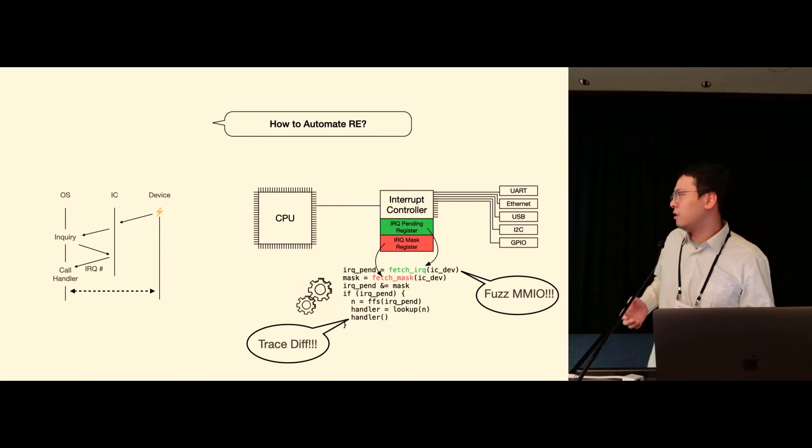Since we know that all those traces would start from a common exception entry point, we can just simply do a trace diff and find out all those divergence points, which would be the interrupt handlers we were trying to look for.